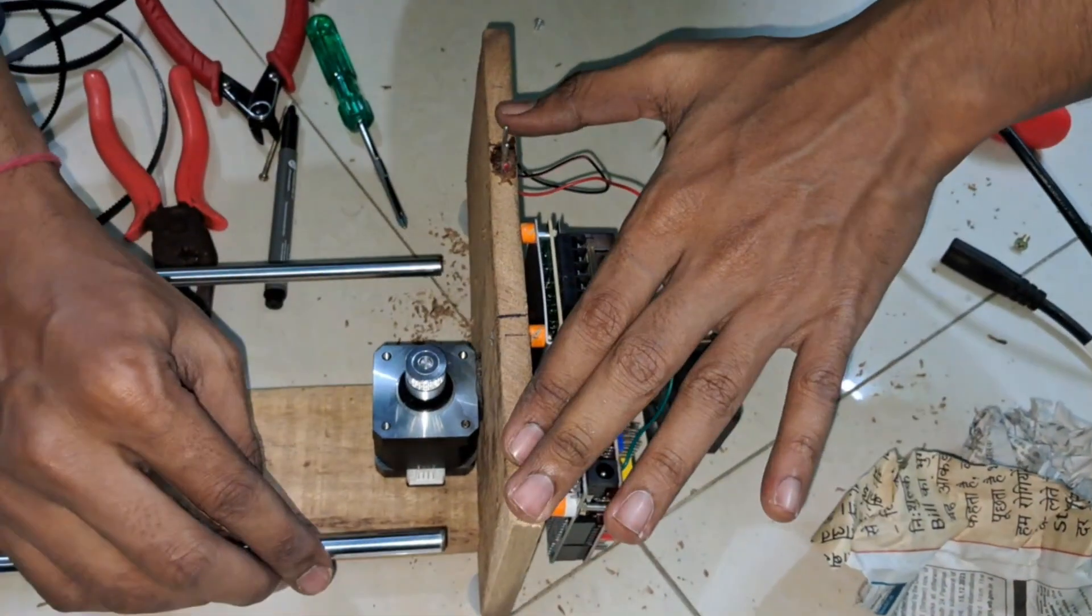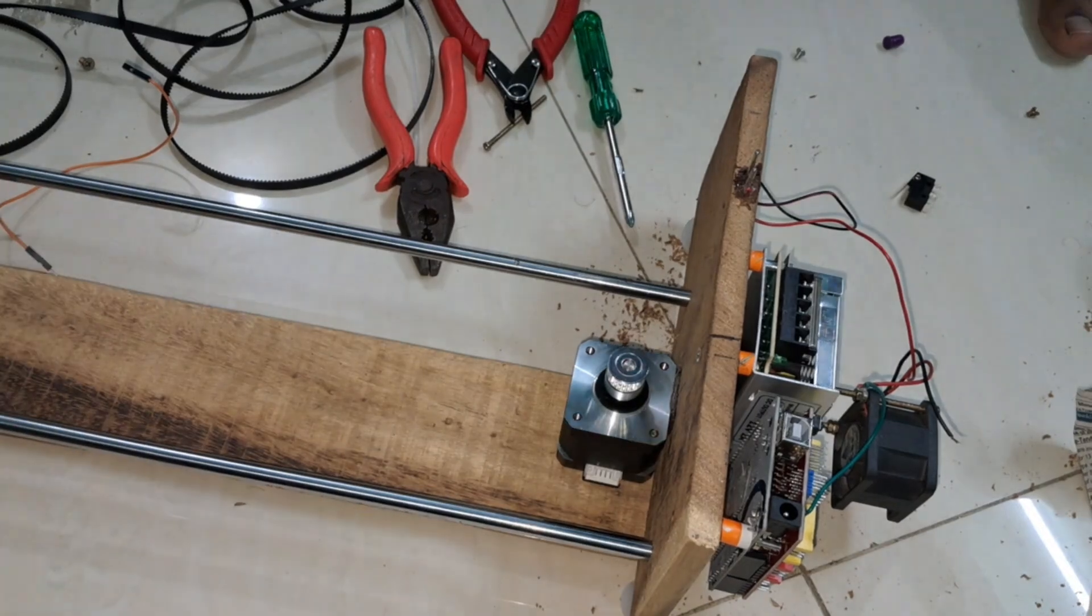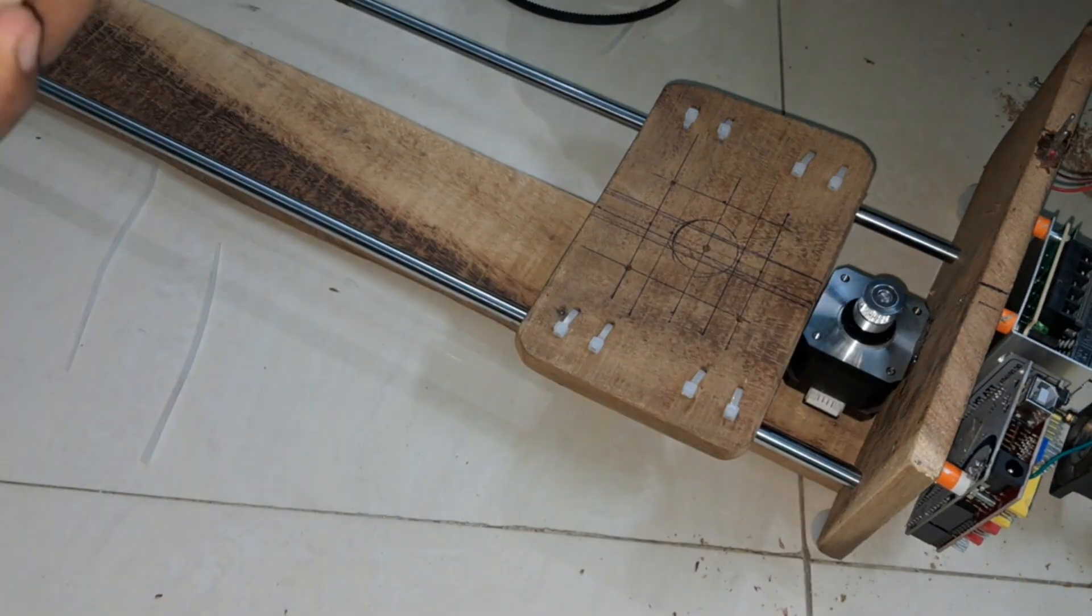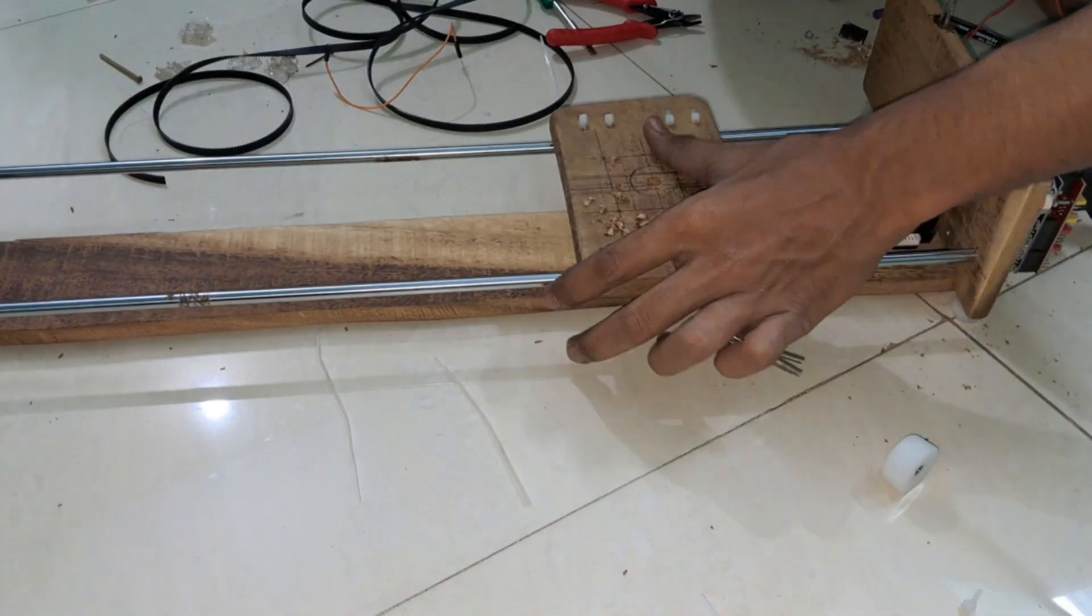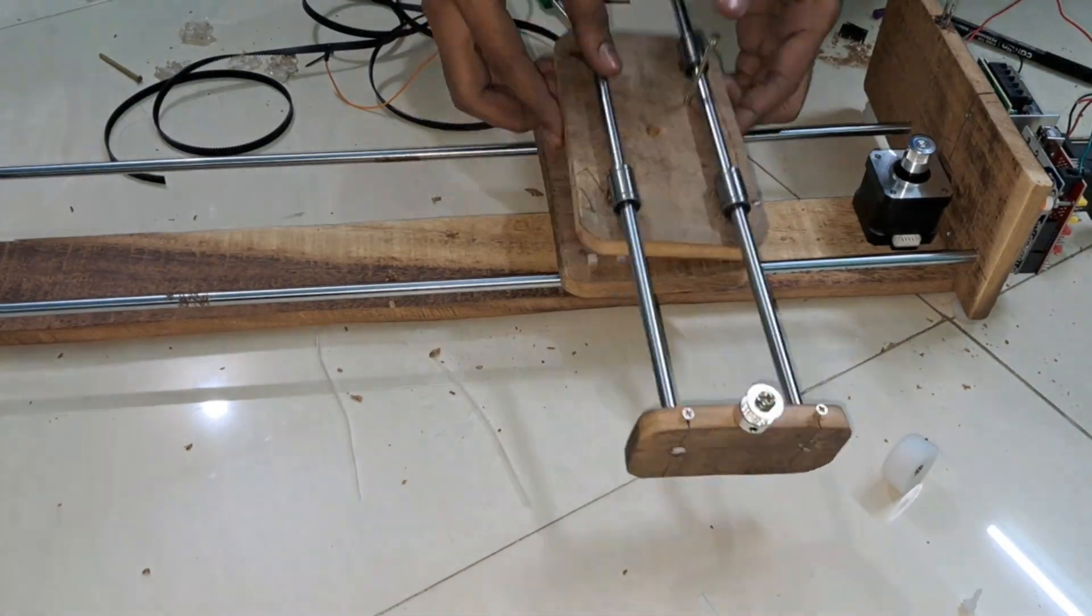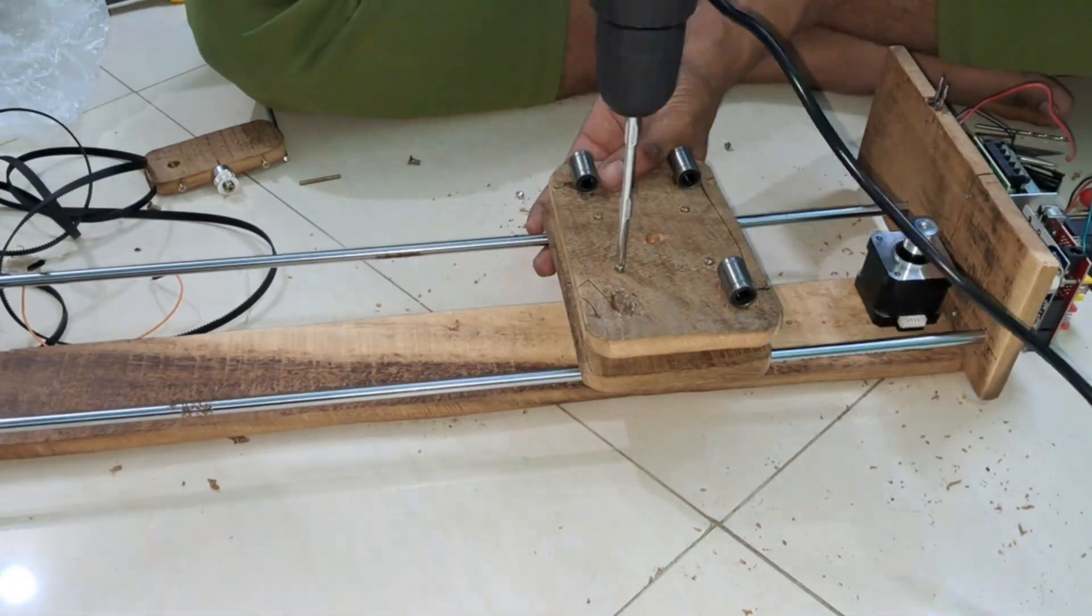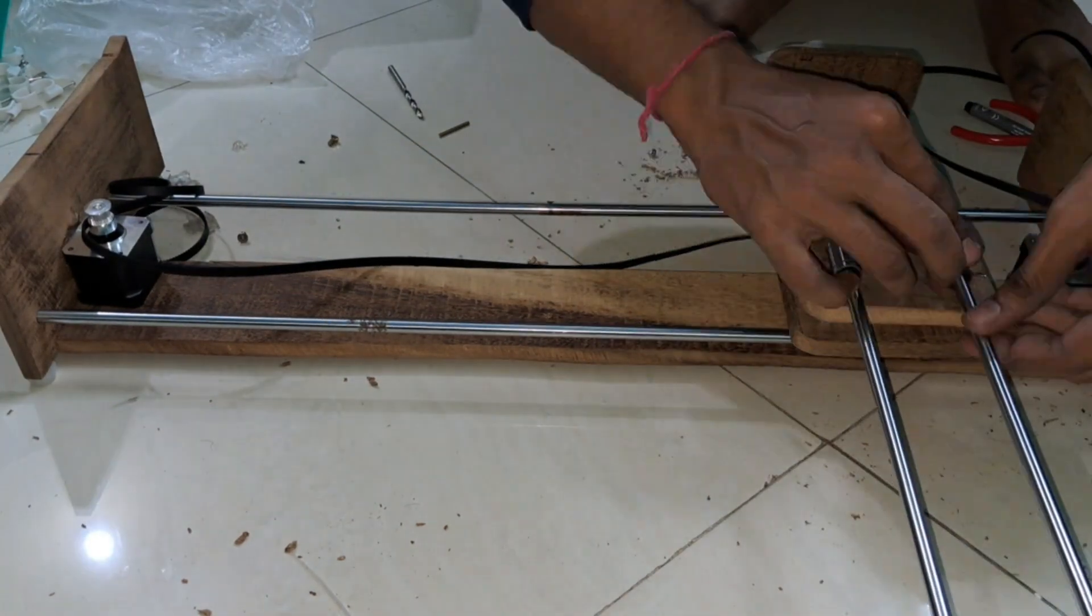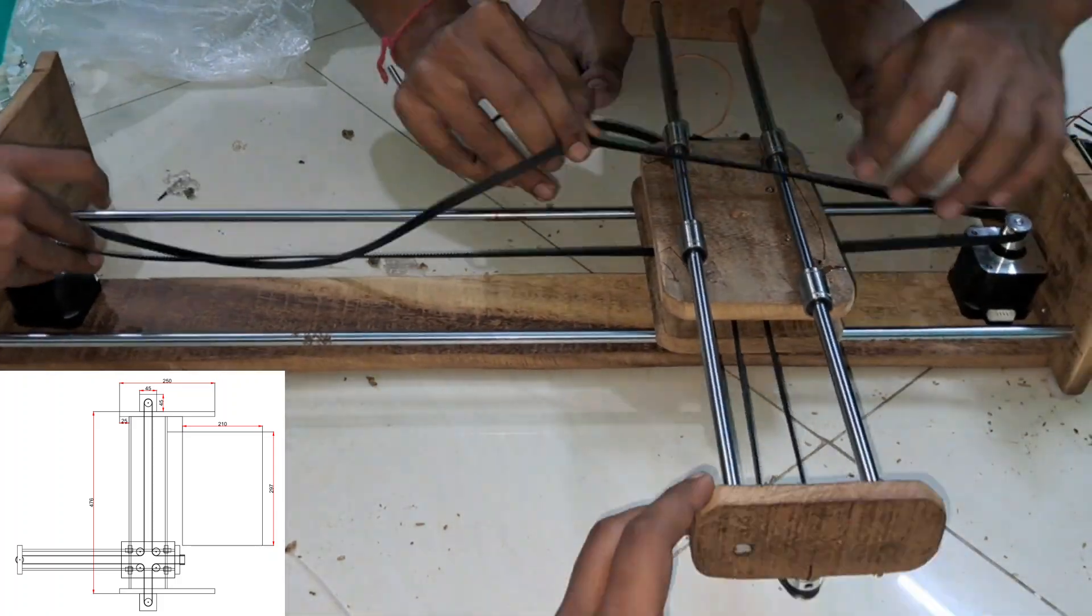Connecting the belt and sliding mechanism to the CNC writing machine. Now it's time to install the belts that will drive the movement. Stretch the belt across the frame and loop it through the idler pulley on the opposite side. Tighten the belt just enough to avoid any slack but not too tight to restrict movement.